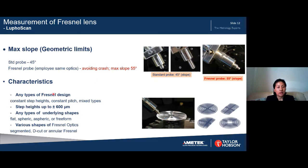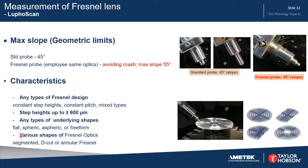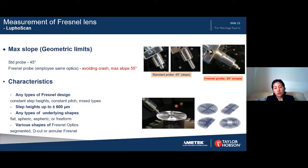With Luphoscan, we can measure any type of Fresnel design — all three different types: constant step height, constant pitch, and the mixed type. Because it has a very large absolute measurement range, it can measure step heights up to plus or minus 600 micrometers. For typical Fresnel lenses the underlying surface is flat, but some Fresnel lenses may have a spherical, aspherical, or even freeform underlying surface — for all these different shapes, Luphoscan has no problems. It can also measure segmented Fresnel or annular Fresnel lenses.